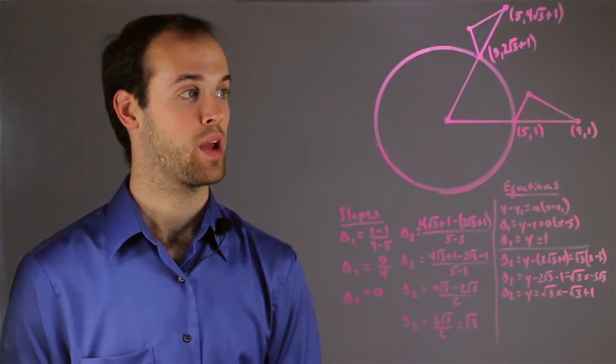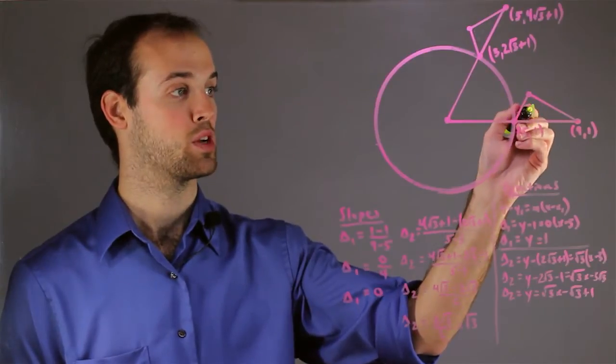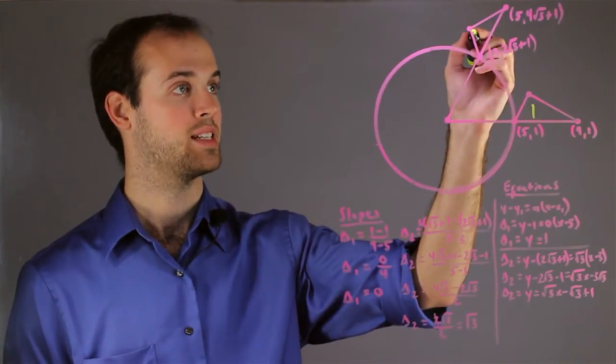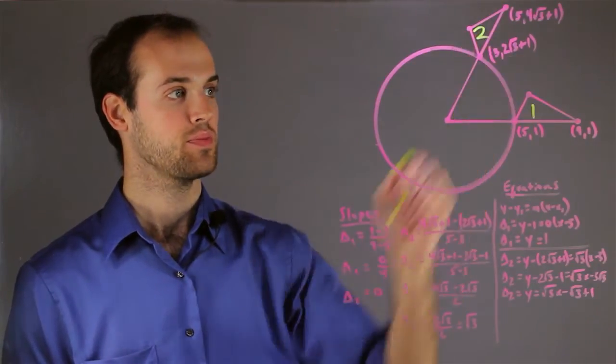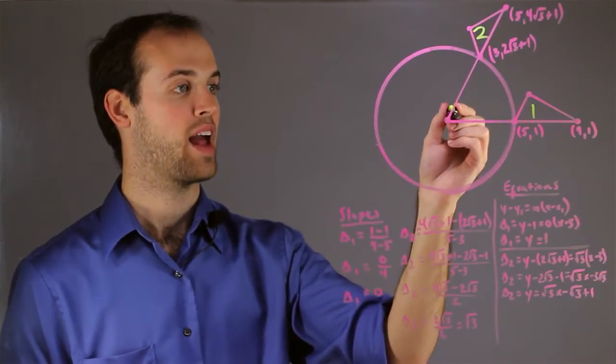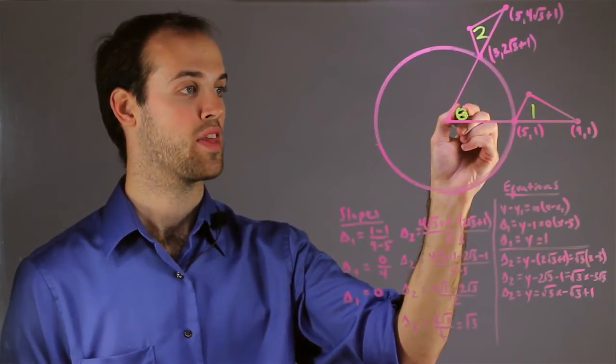So let's take a look at our diagram. We have triangle 1, this is the original triangle, and it's rotated to this position. And our job is to find out the measure of this angle, and I'll call it theta.